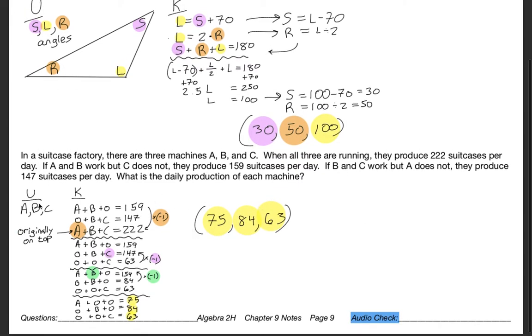All right, so if A and B work, but C does not. I'm going to take all these three, A, B, and C. Those are my unknowns. You might think it'd be unnecessary to write this out, but I really do think it is very helpful. This is how many suitcases that they each produce in a day. So if you have just A and B with nothing from C, you get 159. If you have only B and C, then you get 147.